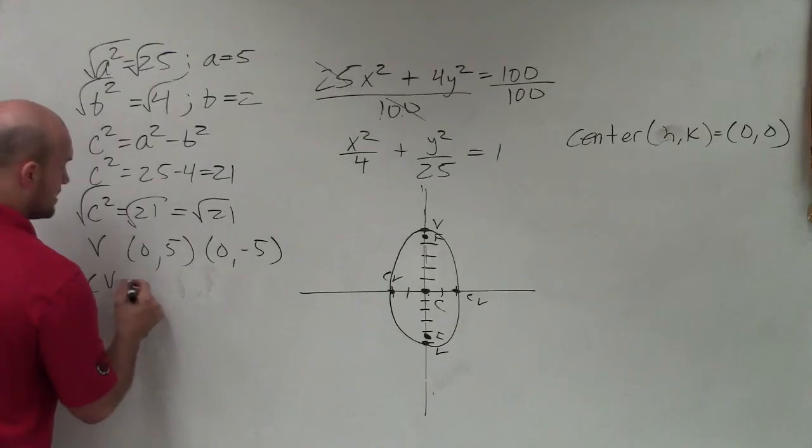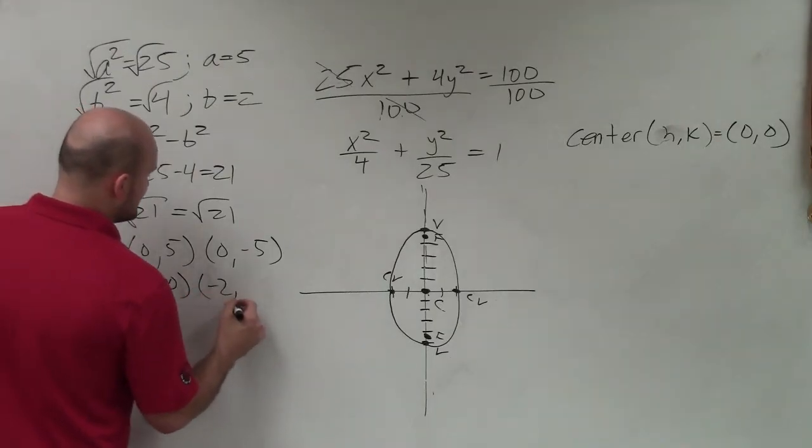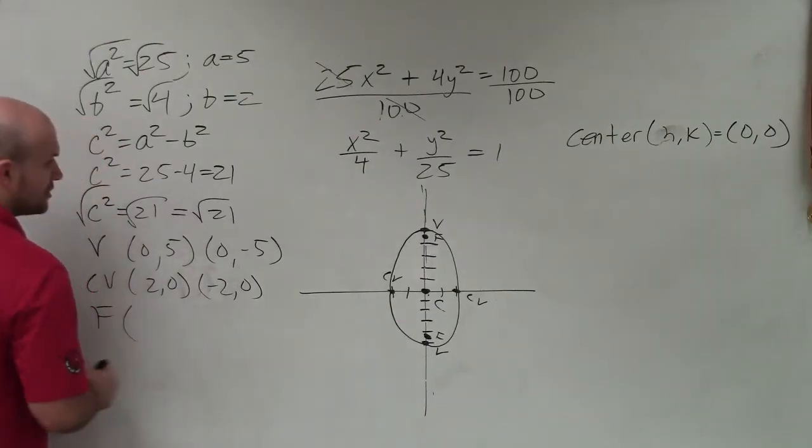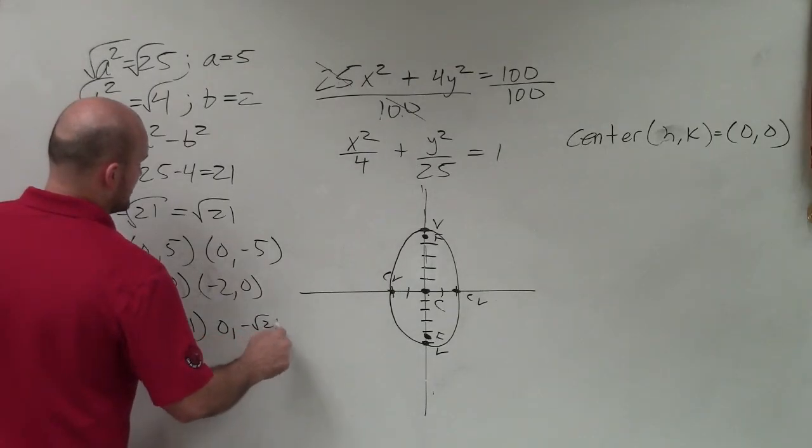My co-vertices are going to be at 2, 0 and negative 2, 0. And my foci are going to be at 0, square root of 21, and 0, negative square root of 21.